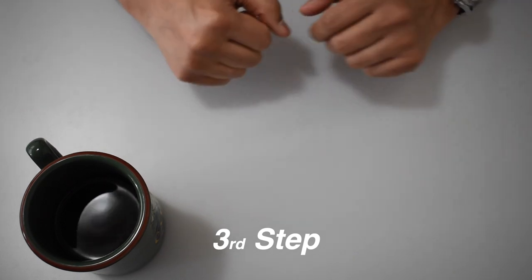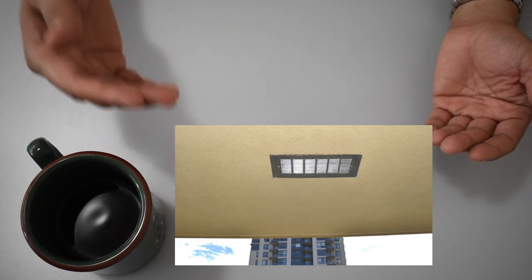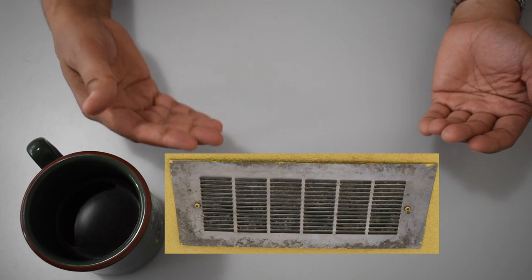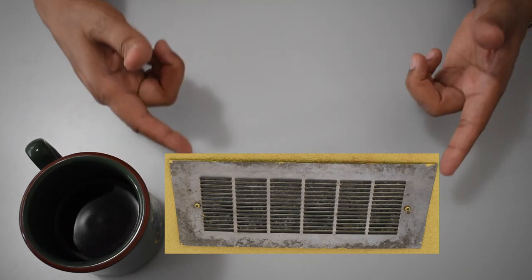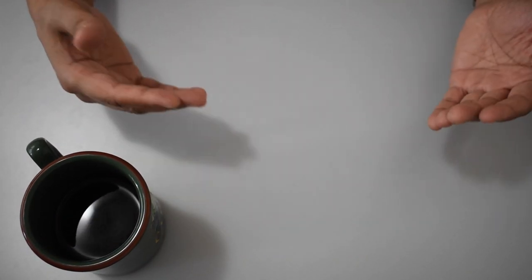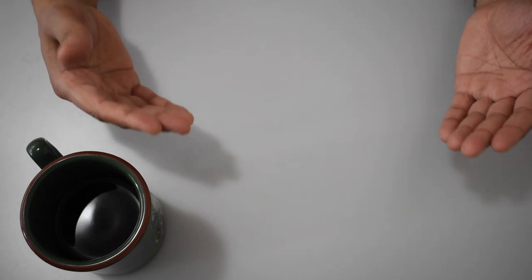The third step, check the outside vent that expels the dryer's moist air and see if air is blowing out of it. In my case, the air was blowing out of it, but very little.